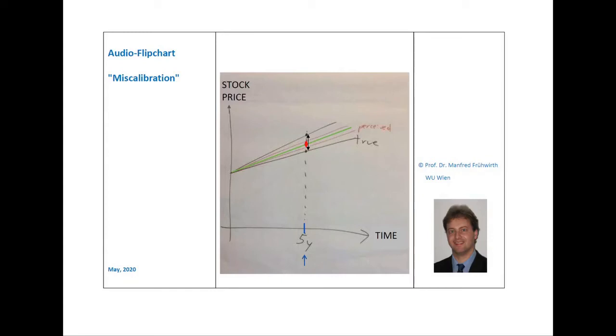However, as defined before, people who are subject to miscalibration are too sure that they can predict things. As a result, they are underestimating the risk and therefore quote too narrow confidence intervals.